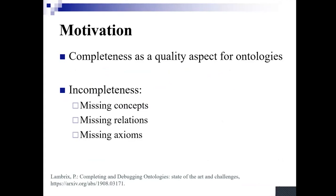To be able to provide good services, it's needed that these ontologies are of good quality. I will focus on one particular quality aspect, namely completeness. The idea of completeness is that we want as high coverage as possible of the necessary concepts, relations, and axioms. In general, it's not very easy to say when an ontology is complete, but it is actually possible to define when a version of an ontology is more complete than another version. Incompleteness can deal with missing concepts, missing relations, and missing axioms.